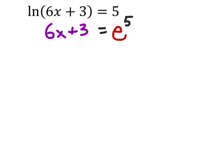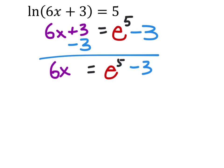So we'll subtract 3 from both sides like this, and I'm not going to evaluate e to the power of 5 just yet. And so what this gives me is 6x equals e to the power of 5 minus 3.